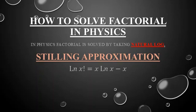We will solve factorials in physics. In physics, factorials are solved by taking the natural log first. So if we have any quantity x factorial, we take the natural log of this quantity, and it equals x·ln(x) minus x. We can derive this formula: ln(x!) = x·ln(x) - x.